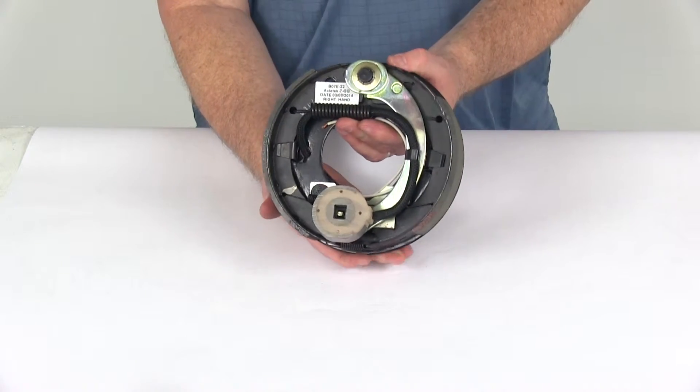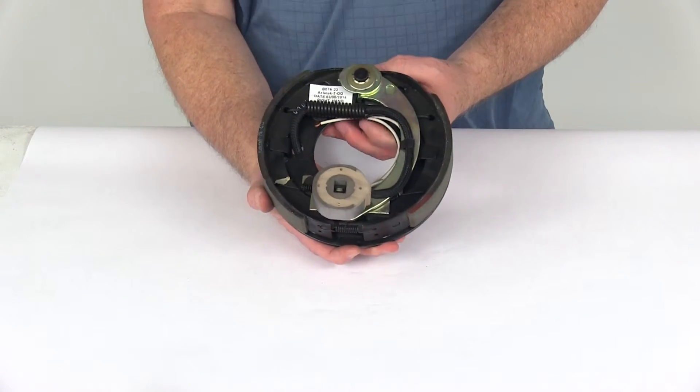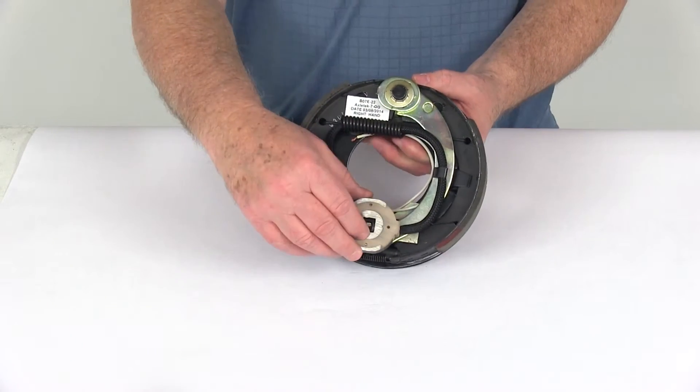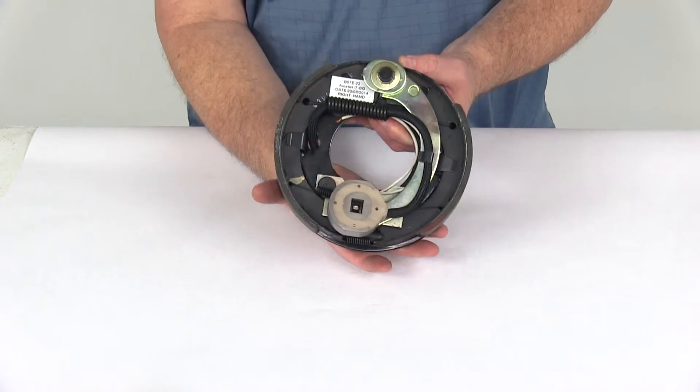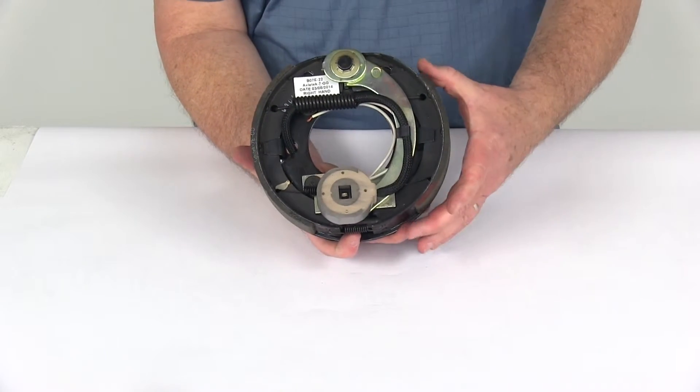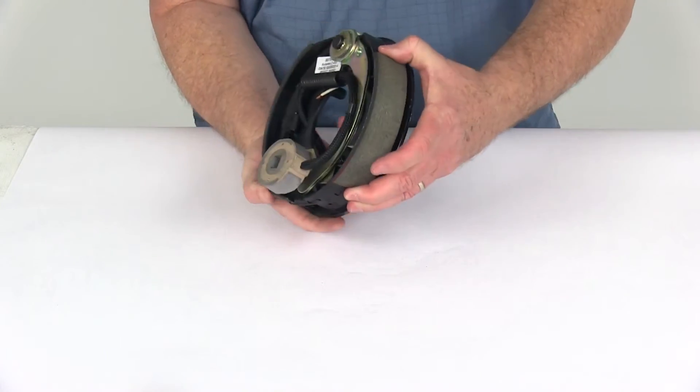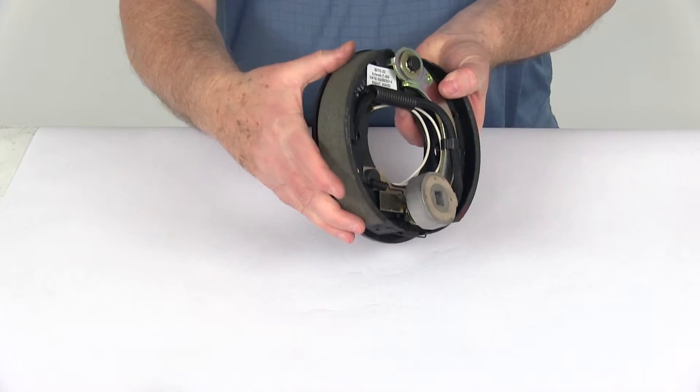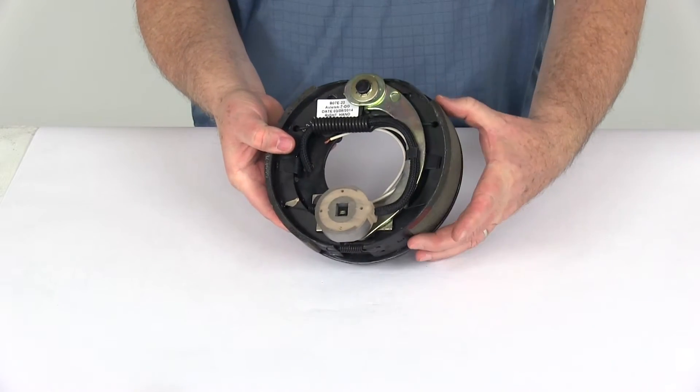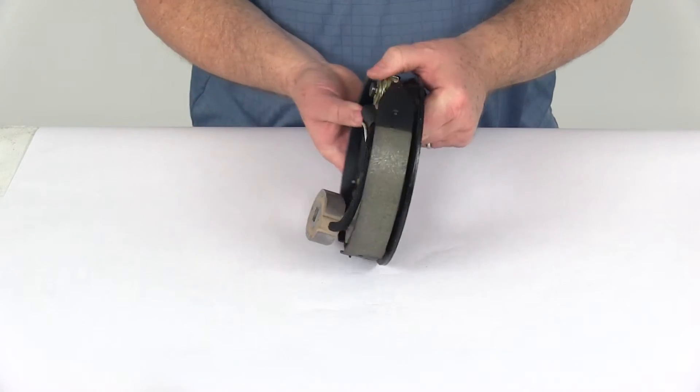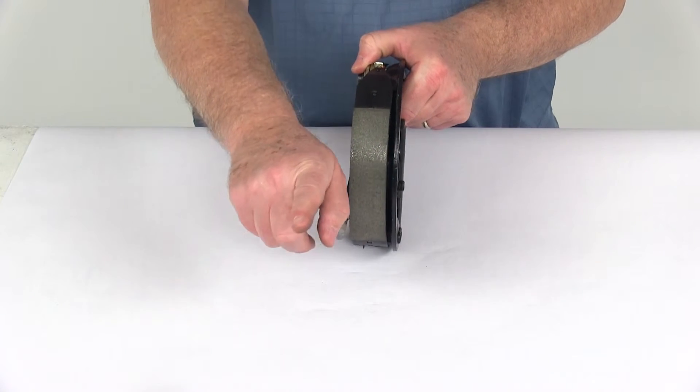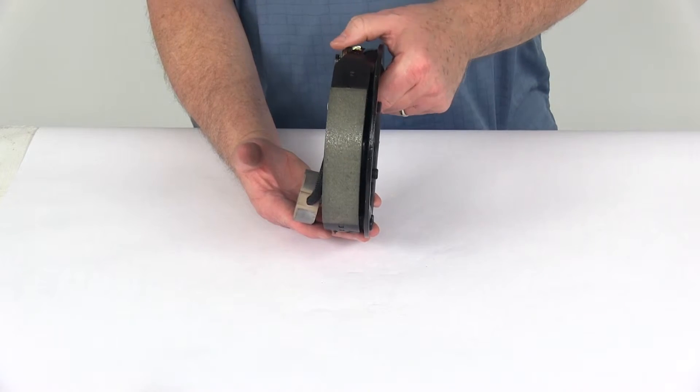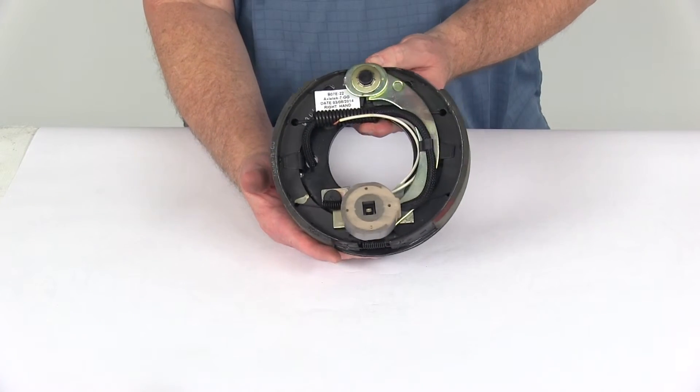This is the right-hand or passenger side brake assembly. Most will come with a sticker that says right-hand side, but if that sticker wasn't there, the easiest way to tell is to look at the size of the shoe lining. This one's a smaller lining, this one's a larger lining. The shoe with the smaller lining will always face towards the front of the trailer. If this is the front of the trailer and the smaller shoe faces that way, that would make this the right-hand side or passenger side assembly.